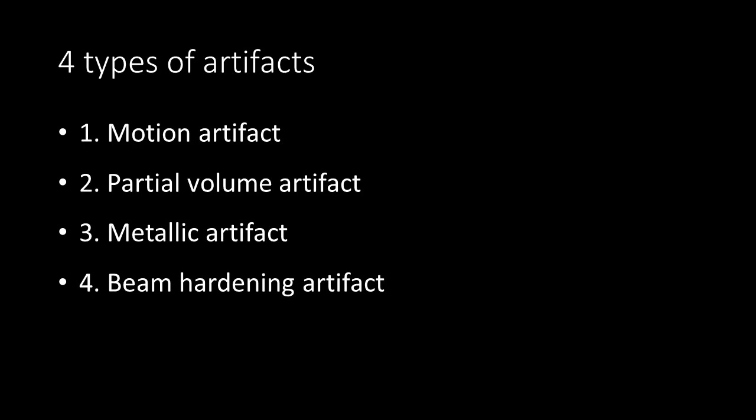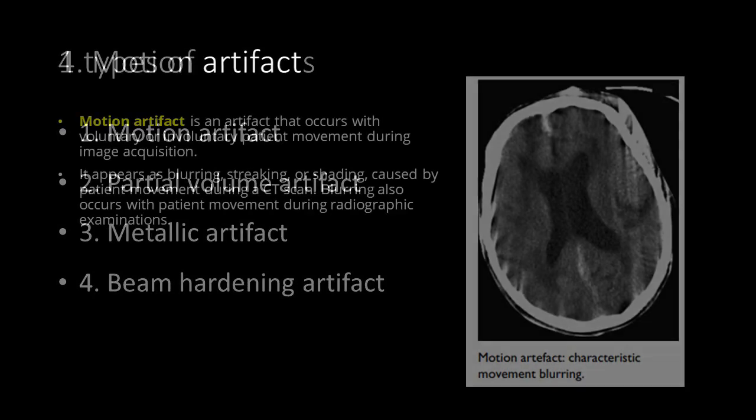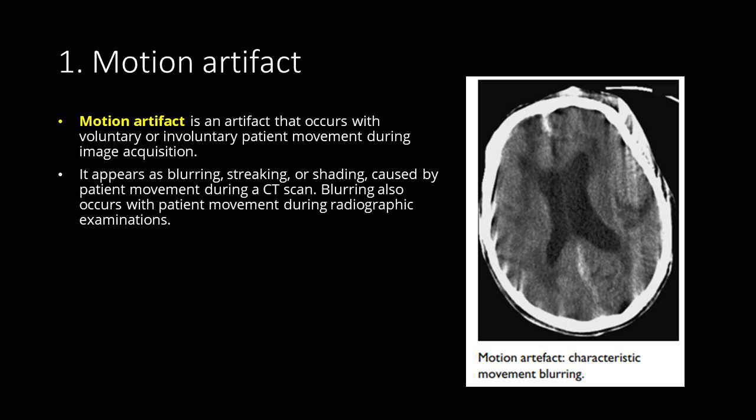First, we will discuss motion artifact. Motion artifact is an artifact that occurs with voluntary or involuntary patient movement during image acquisition. It appears as blurring, streaking, or shading caused by patient movement during a CT scan.